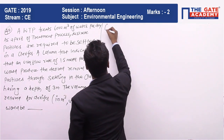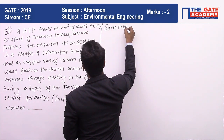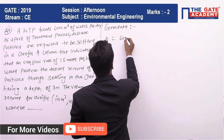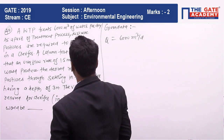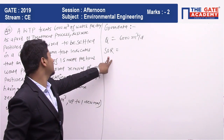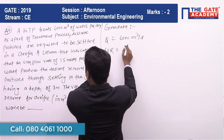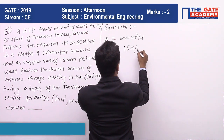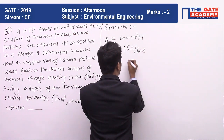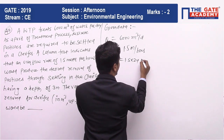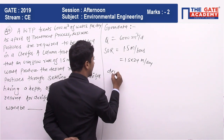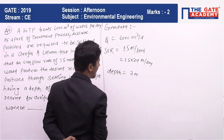So what are the given data? We have Q = 6000 meter cube per day. We have the surface overflow rate, SOR = 1.5 meter per hour. Since Q is in per day and SOR is in per hour, I am converting SOR as 1.5 × 24 meter per day. Next, the depth of the clarifier is given as 3 meters, and they are asking for the volume.